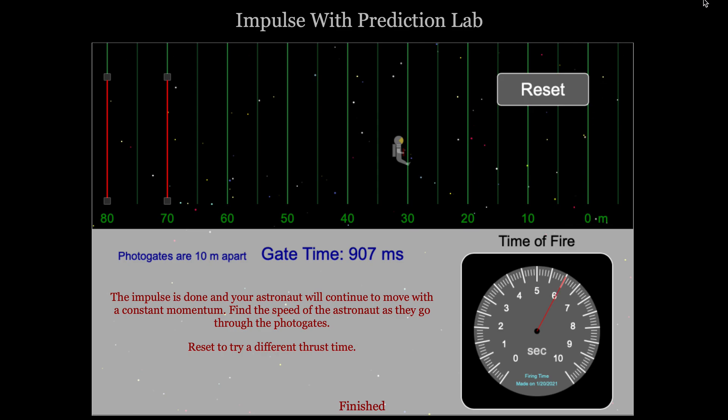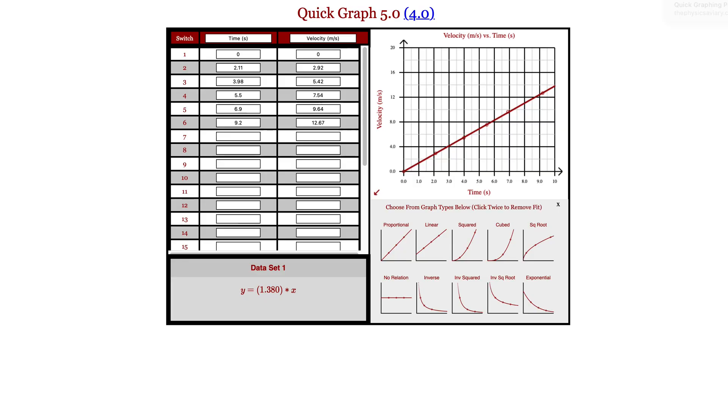After collecting data, students want to go to a graphing program. Put time on the X-axis, velocity on the Y-axis. This is the time you're firing the fire extinguisher, and you should get a really nice proportional graph. The equation should be velocity equals the slope times the time of firing. The slope should equal the thrust of the fire extinguisher divided by the mass of the astronaut.